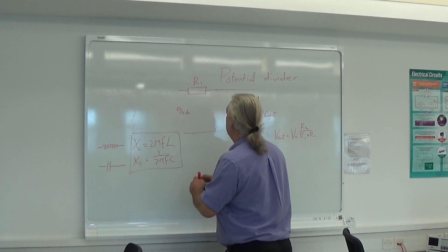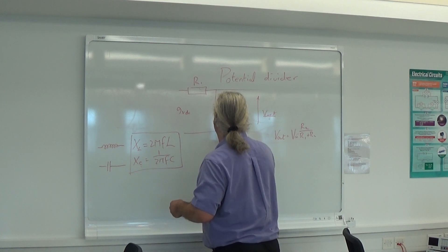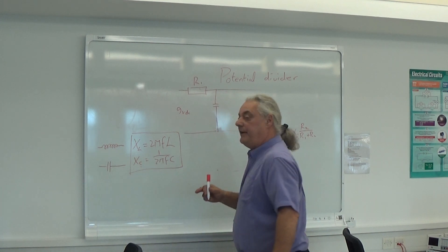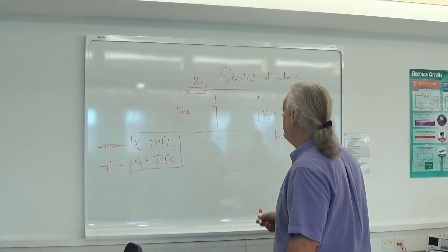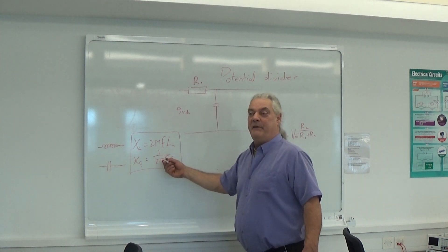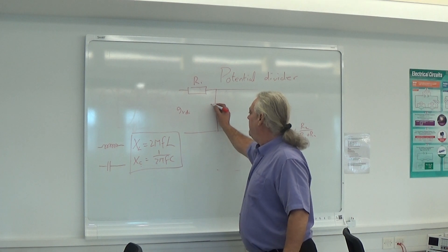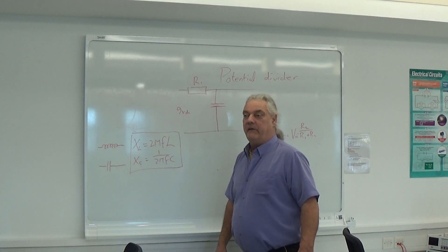So the circuit we have in Multisim is this. But it's still a potential divider. Except this now behaves differently at different frequencies. So if you say to me, well, what's the impedance of that capacitor?